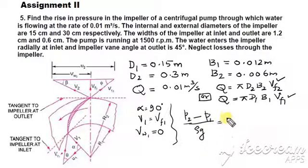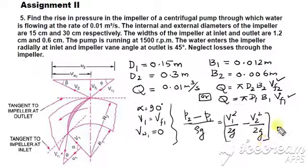That is equal to V1 square by 2g minus V2 square by 2g. Then the Euler head, so this change in dynamic head. Then Euler head is VW2 u2 divided by g. So 2g is not there.